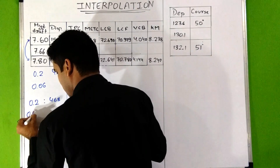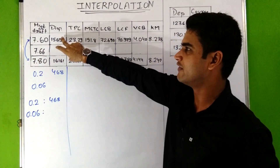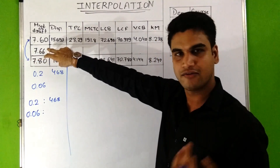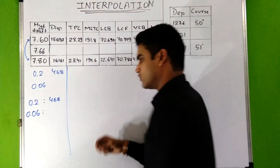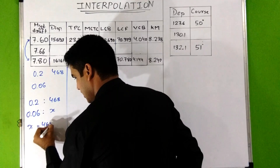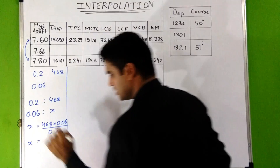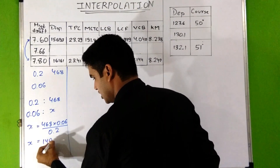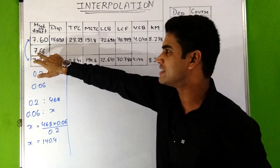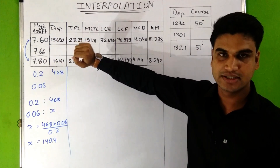If the draft increases by 0.06 meters, how much will the displacement increase? From the given data we can see that as the draft increases, displacement also increases. To find that value we do cross multiplication: x equals 468 multiplied by 0.06, divided by 0.2. From this we get x equals 140.4. This means the displacement for draft 7.66 will increase by 140.4 from the displacement at draft 7.6.